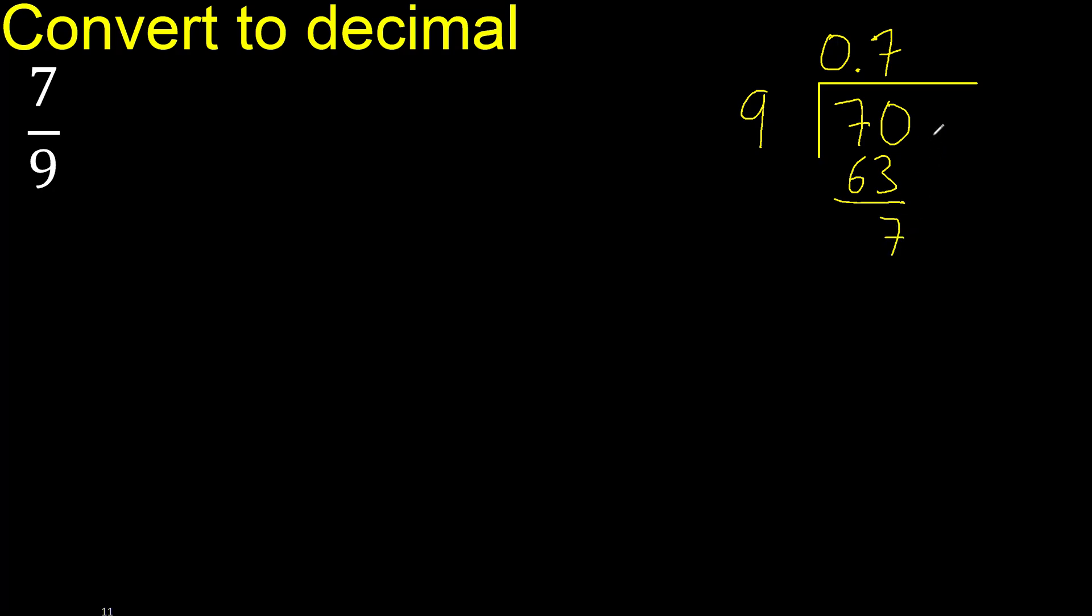There is no number, therefore complete with 0. Point is here, ok. 0 point 70. 9 multiplied by 7, 63, subtract.